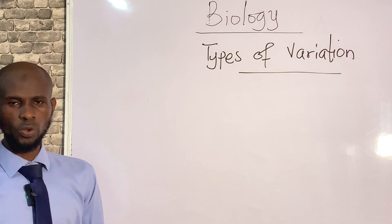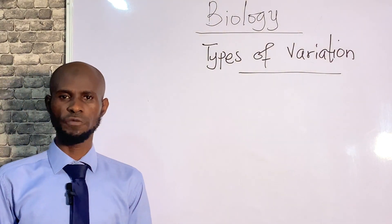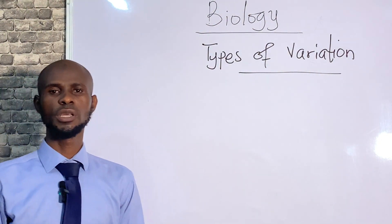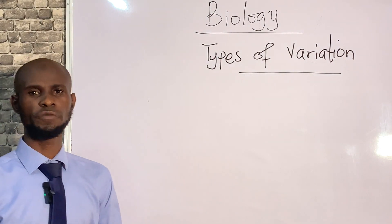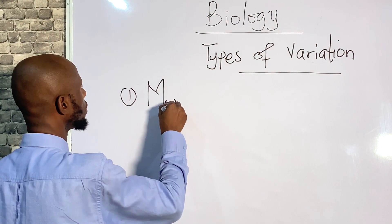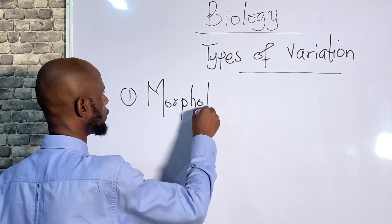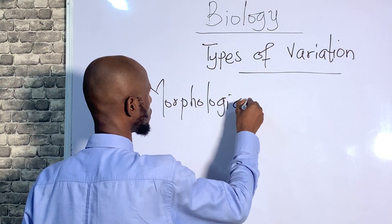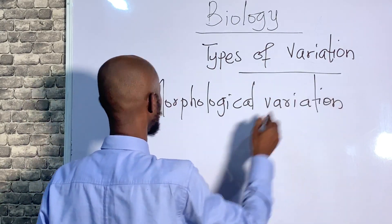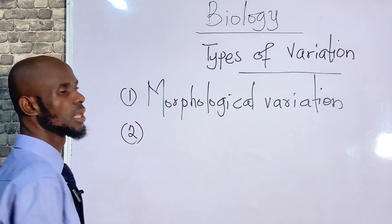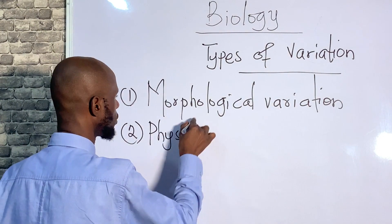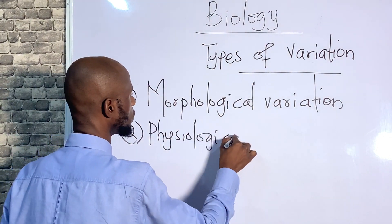Good day students. We are going to continue from where we stopped on variation. Today we are looking at types of variation. We have two major types: the first is morphological variation, and the second is physiological variation.